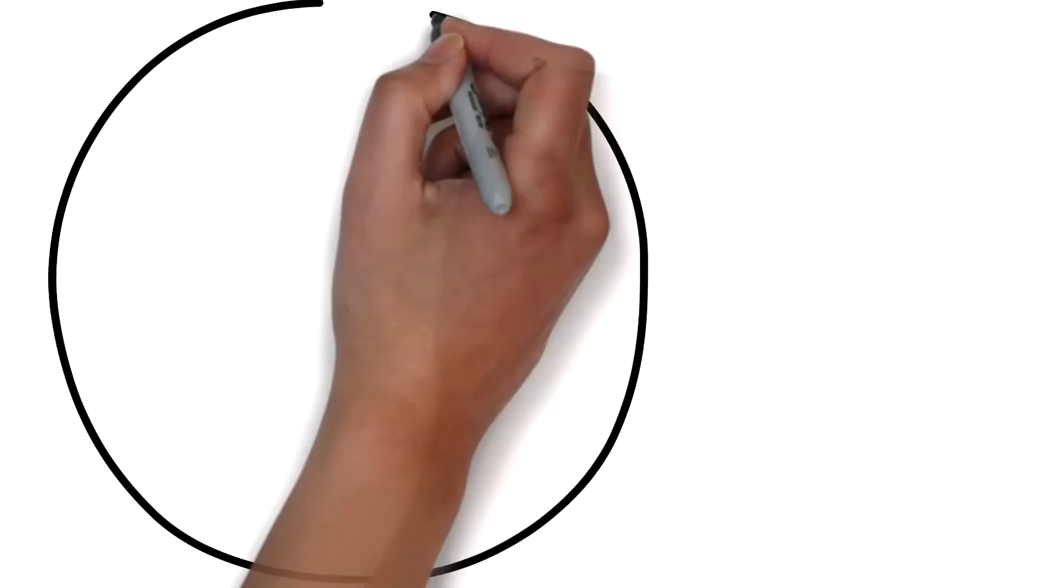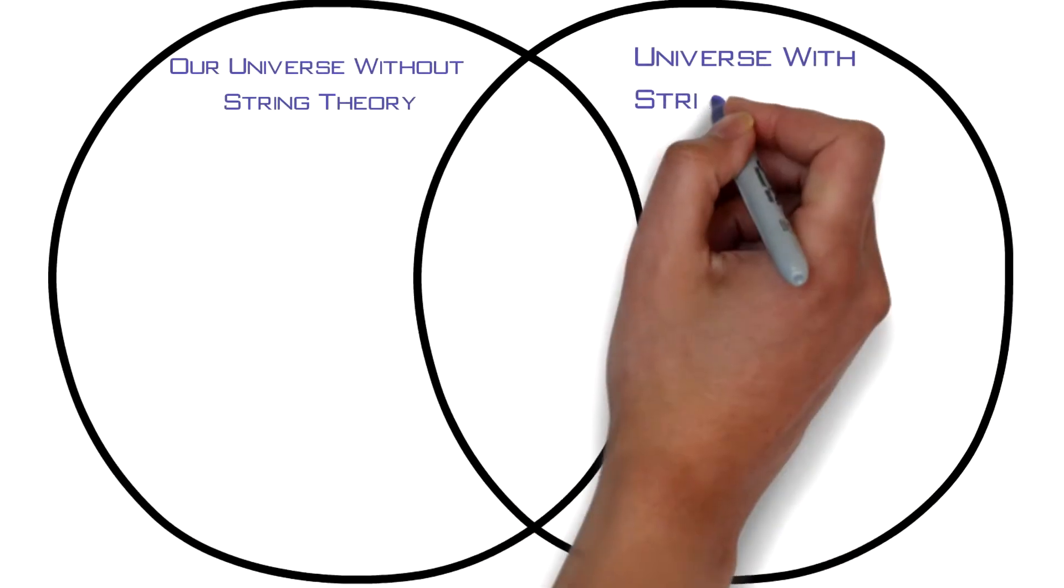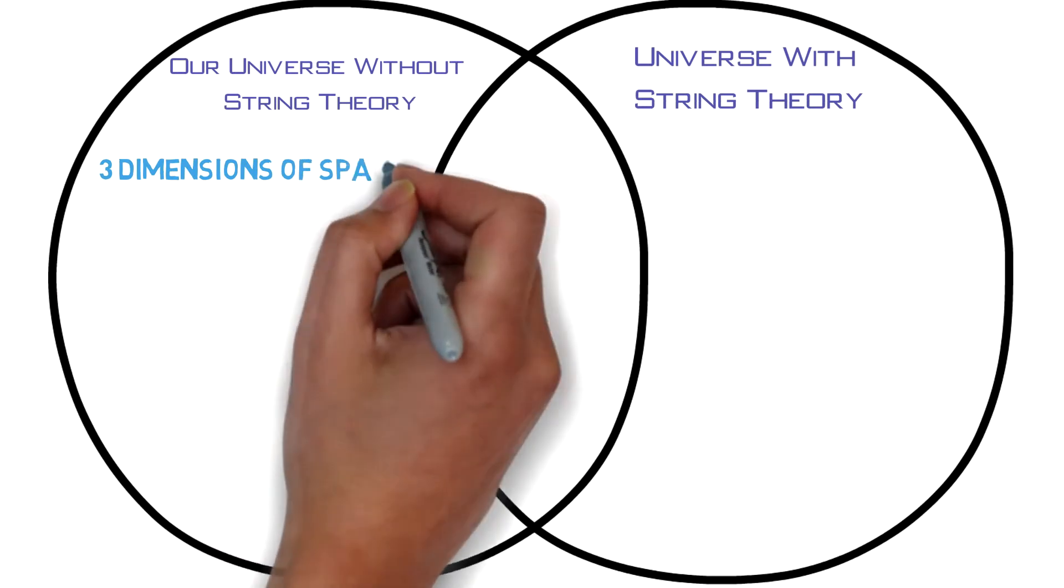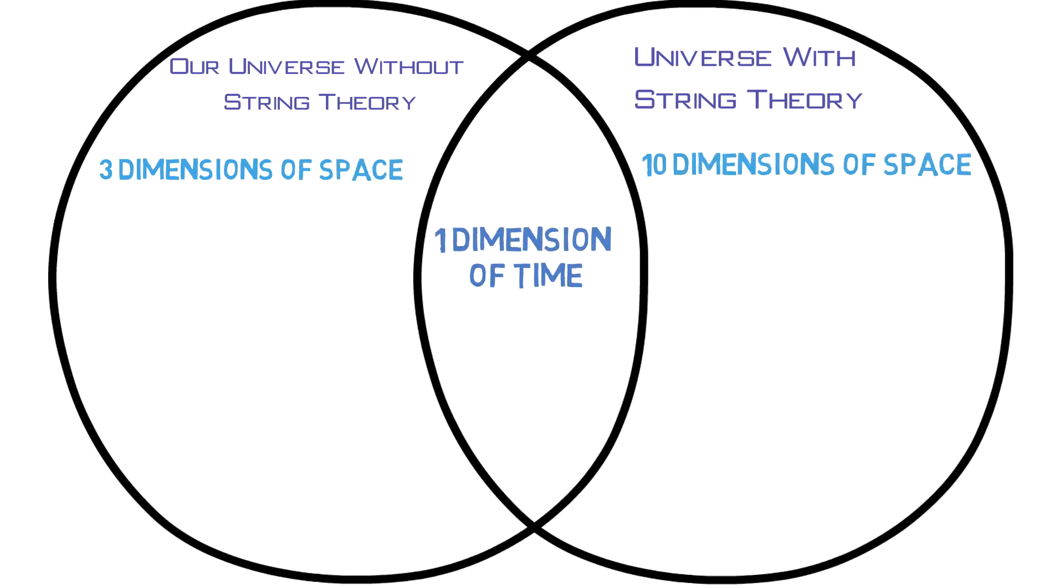String theory requires multiple dimensions. We think of our universe as having four dimensions, three space dimensions and one time dimension. However, string theory requires eleven dimensions, ten space dimensions and one time dimension. What? How does that work?